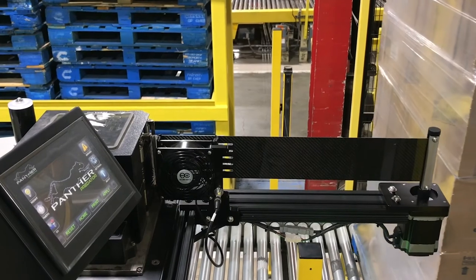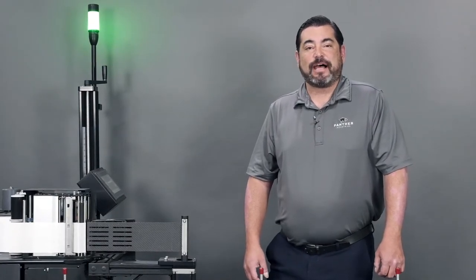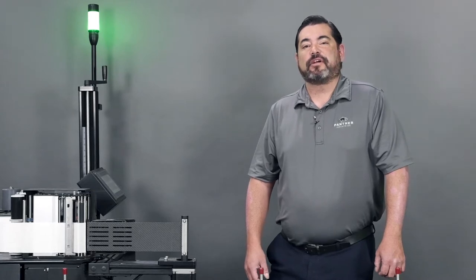This type of labeling automation is ideal for carton and pallet labeling applications. With a durable carbon fiber swing arm, labels of various sizes can be applied fast, accurately, in multiple application scenarios.